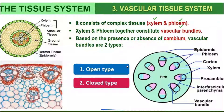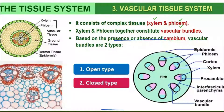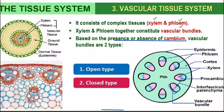Vascular bundles are classified as open or closed vascular bundles based on the presence or absence of cambium. When cambium is present, they are called open vascular bundles. When cambium is absent, they are called closed vascular bundles.